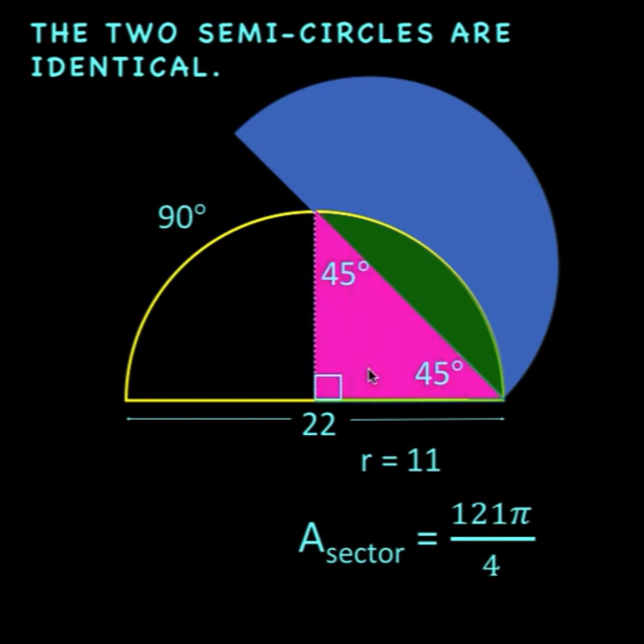Then let's construct this pink triangle. We have here an isosceles right triangle. And we can also find the area of this pink triangle.